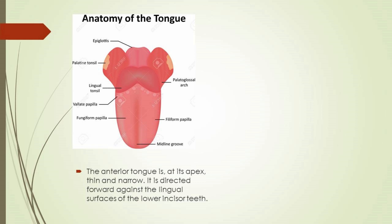The anterior tongue at its apex is thin and narrow, directed forward against the lingual surfaces of the lower incisor teeth. The posterior part at its root is directed backward and connected with the hyoid bone by the hyoglossi and genioglossi muscles and the hyoglossal membrane; with the epiglottis by three glosso-epiglottic folds of mucous membrane; with the soft palate by the glosso-palatine arch; and with the pharynx by the superior pharyngeal constrictor muscle. It also forms the anterior wall of the oropharynx.